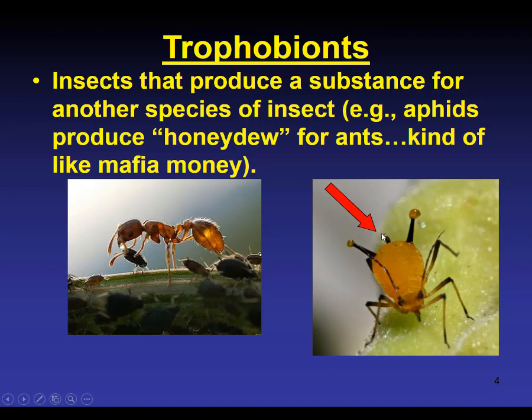The sugar water comes out the back end of the middle of the aphids. Side note: if you've ever parked under a tree and come back to find clear droplets all over your windshield, that is honeydew. If you look straight up, that tree probably has a big aphid infestation going on — you were just unfortunate to park under it.